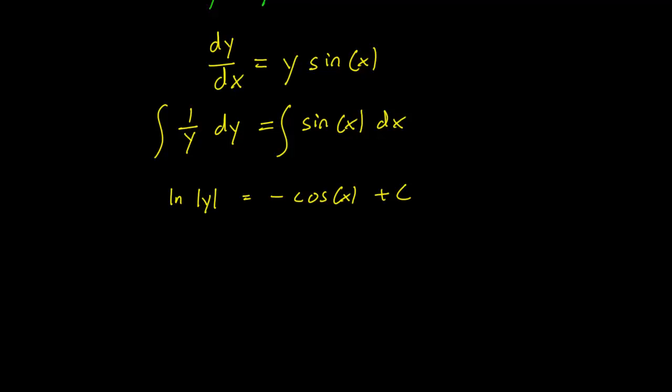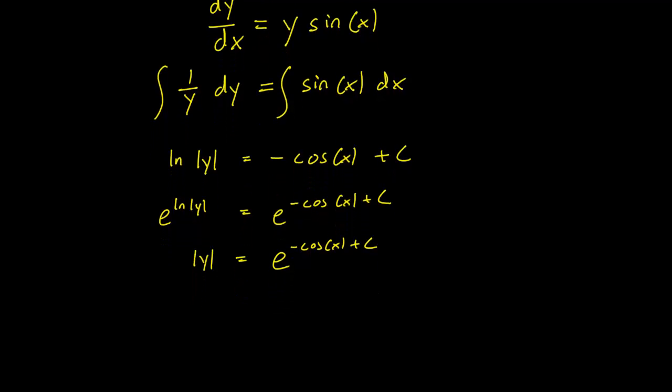So we have to take the exponentials of both sides. So we have e natural log of y equals e minus cosine x plus c. This is just going to be e minus cosine x plus c. And since exponentials are always going to be positive, we can just write this down as y.